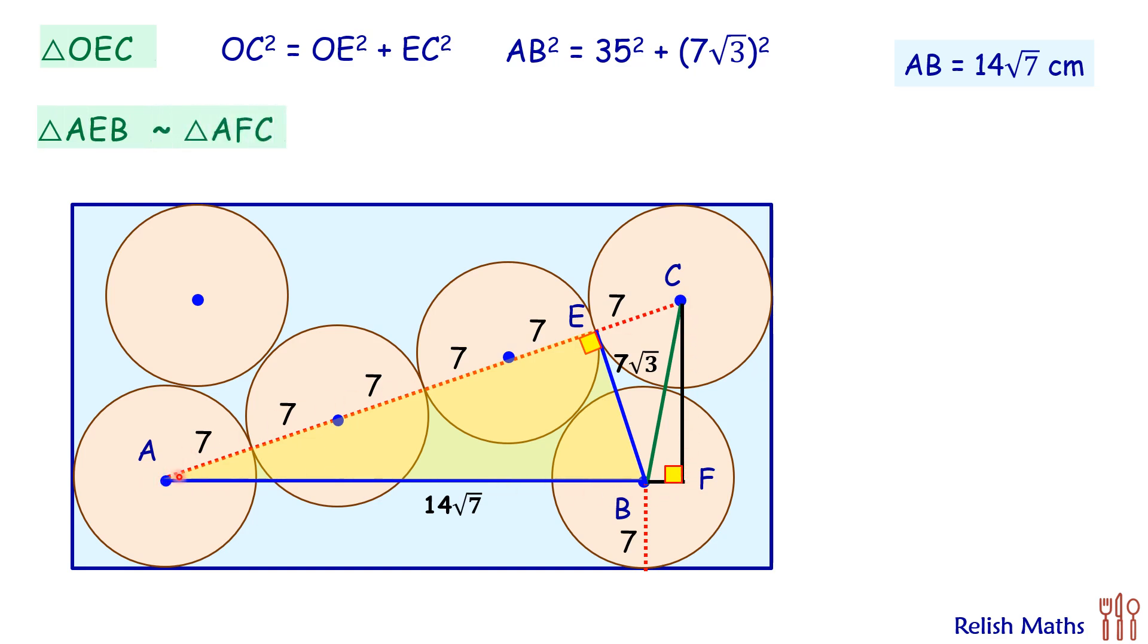As the triangles are similar, the ratio of sides are equal. We can say AE upon AB, which is the hypotenuse, is AF upon AC. This is AF we have to find, and AC is what we have, which is 42 centimeters.